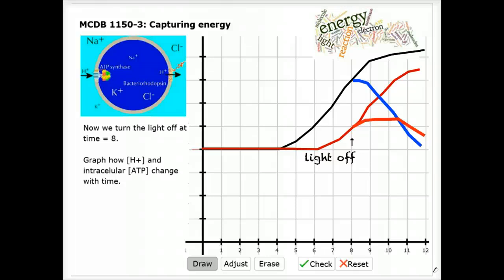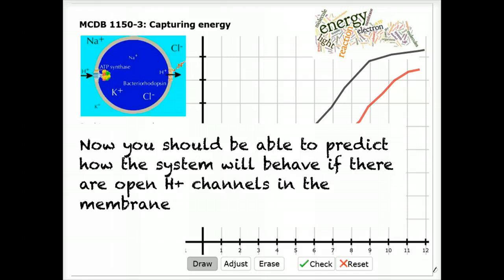ATP synthesis continues as long as there's enough energy in the electrochemical gradient to drive the ATP synthesis reaction. Now you should be able to predict how the system will behave if there are open hydrogen ion channels in the membrane from the beginning.